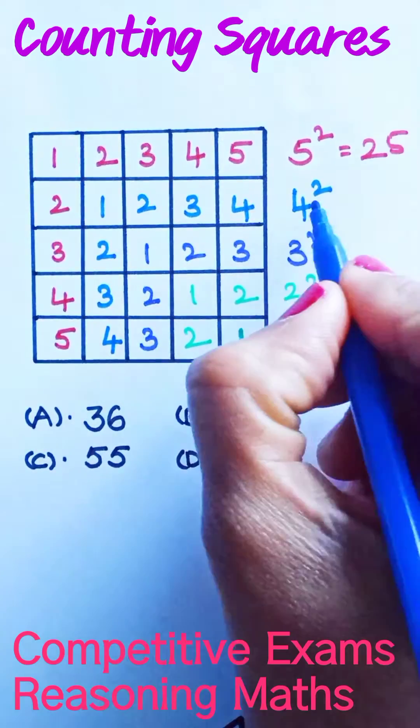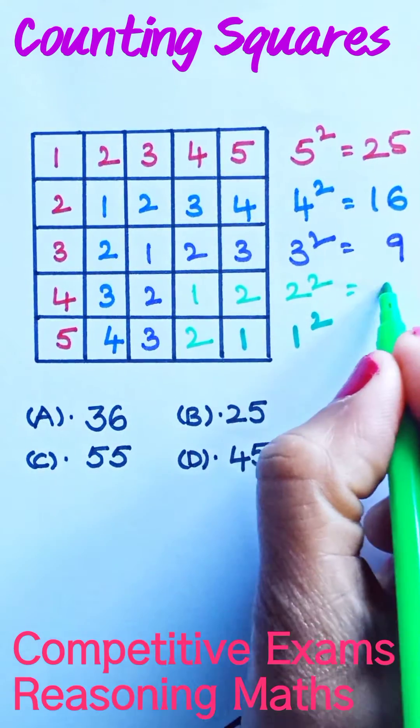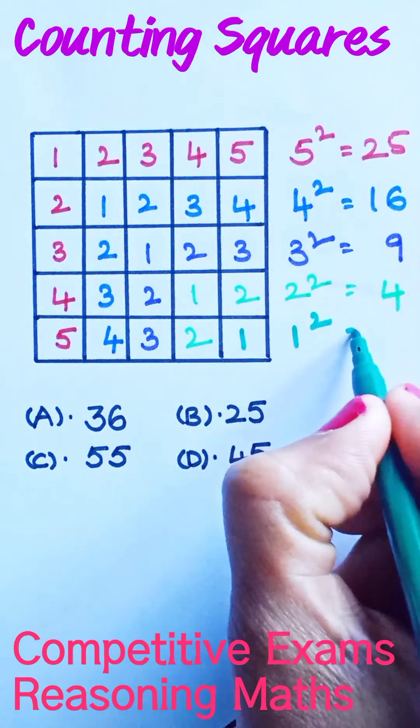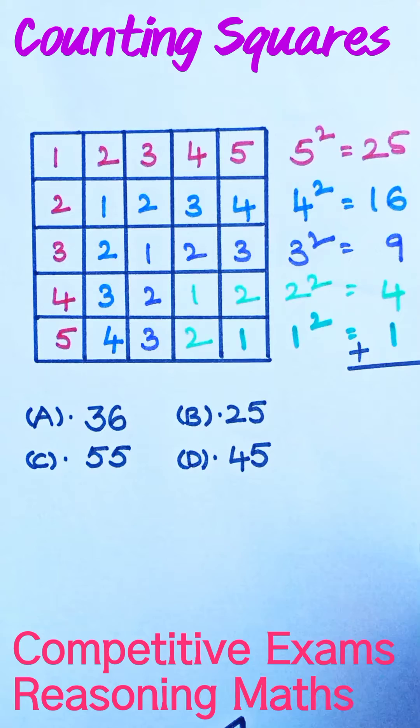Now add all these numbers: 5 squared is 25, 4 squared is 16, 3 squared is 9, 2 squared is 4, and 1 squared is 1. Now let us add all these numbers together.